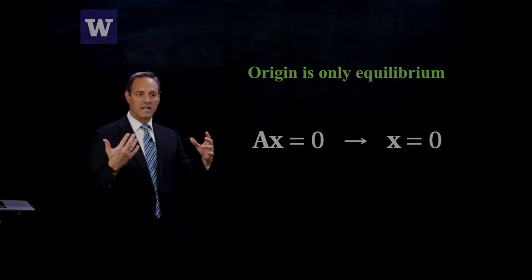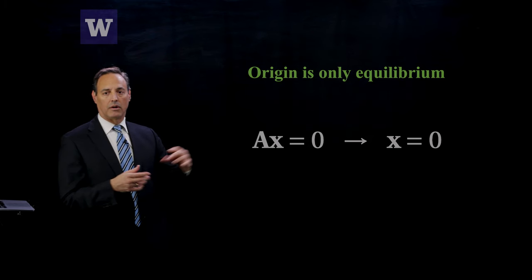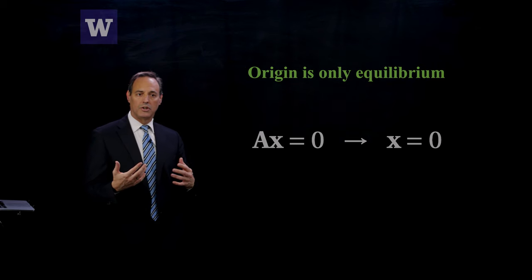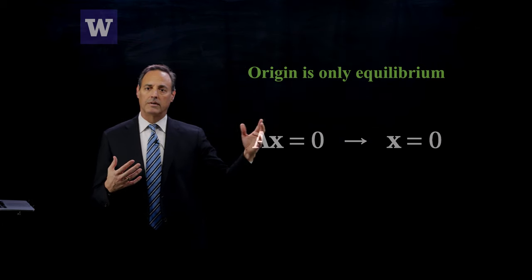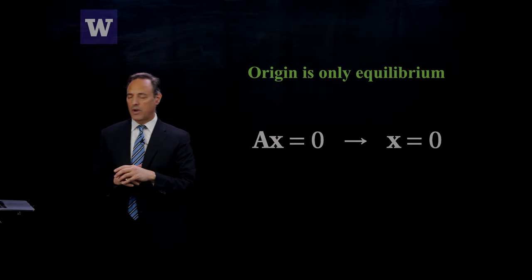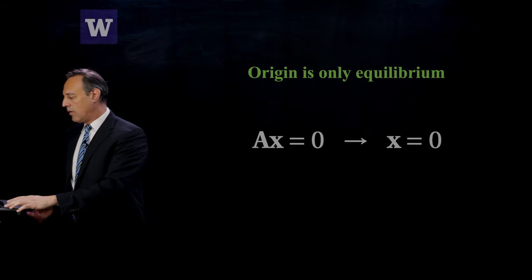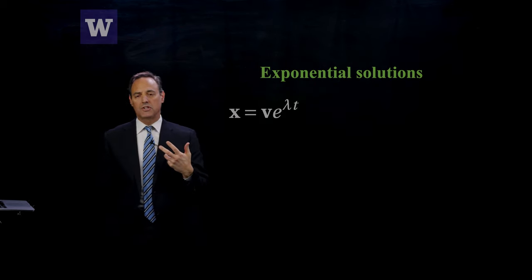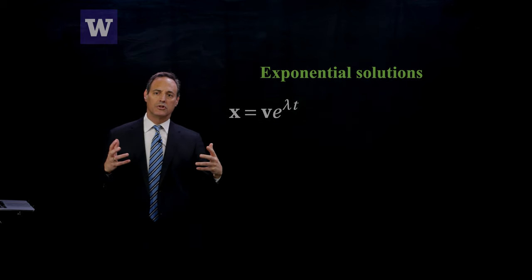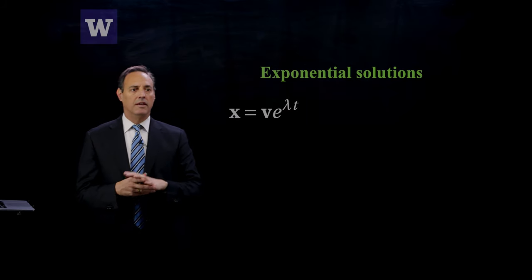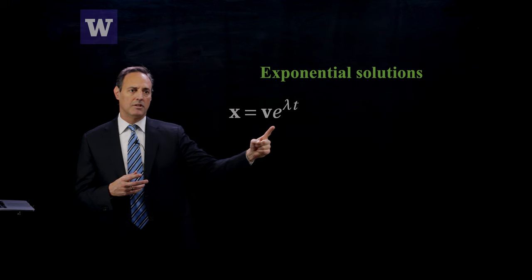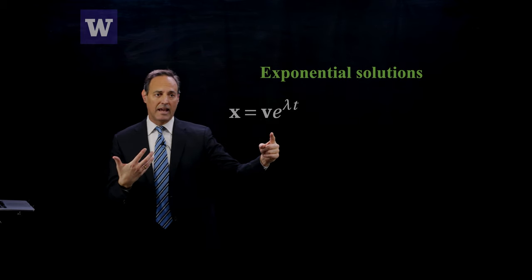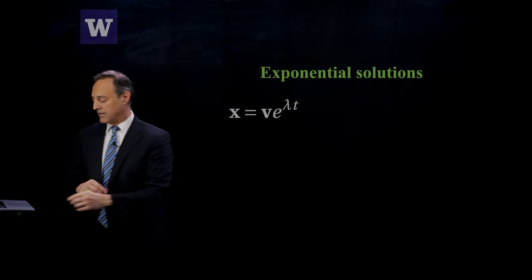For non-singular matrices A, the only equilibrium point is the origin, and we focus on behavior near that origin. What's standard in linear differential equations is to look for solutions that are exponentials. You try x equals v times e to the lambda t. The question is, given this form of solution, how do I find v and lambda that tell me something about the types of solutions I get out of this 2x2 system?